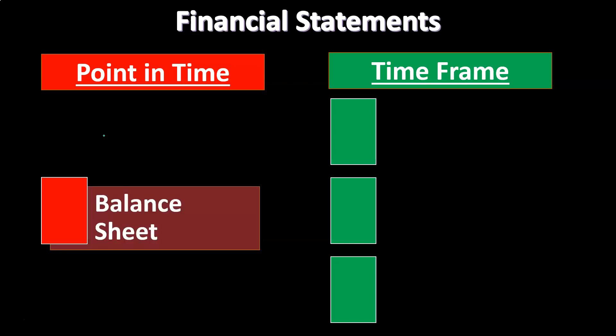The balance sheet gives you the assets, liabilities, and equity — assets minus liabilities being basically the book value, being basically where the company stands at a point in time. If you look at the financial statements for the year ended December 31st, the balance sheet is as of the end of the day, the last point of that period, December 31st.